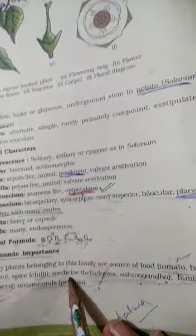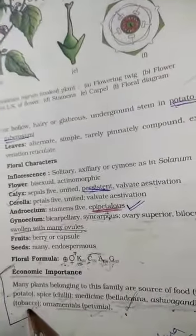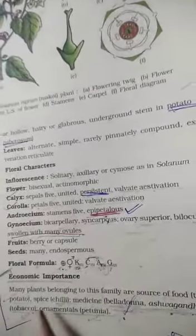For medicine, in this class, the belladonna and ashwagandha are members which are used as medicine. And then fumigatory, fumigatory is tobacco, meaning its smoke is used.